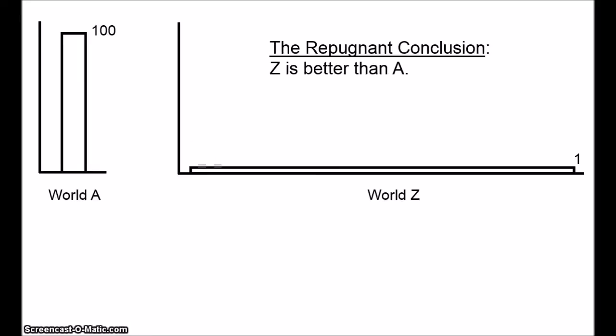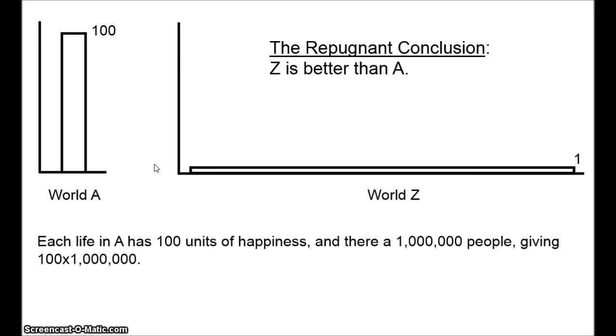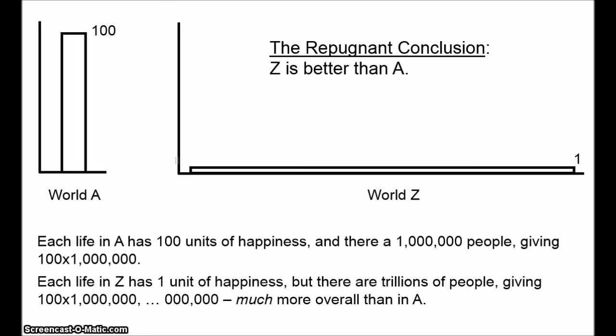I mean, we can make the point much more quickly this way. Each life in A has, say, 100 units of happiness, and there are a million people, giving us 100 times a million units of happiness. Each life in Z has only one unit of happiness, but there are billions and billions and billions of them, which means there's much more happiness overall than in A.